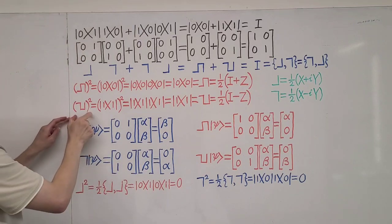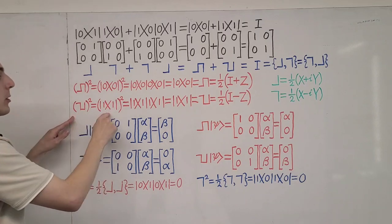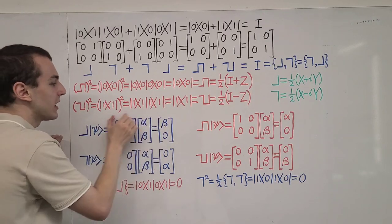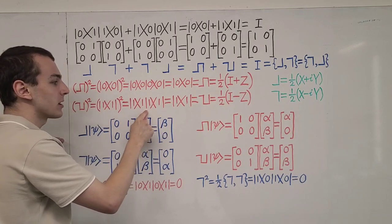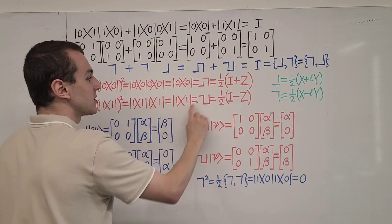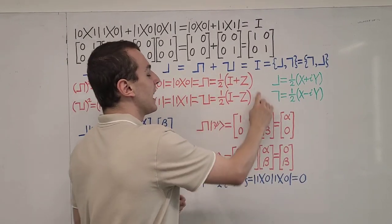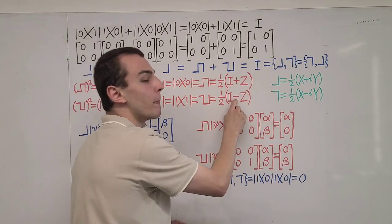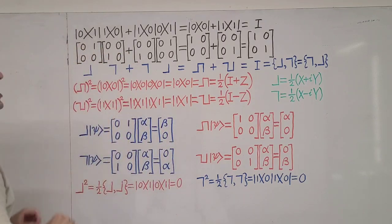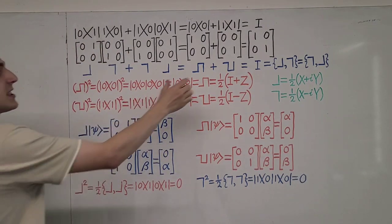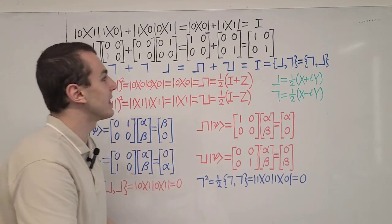Now let's have a look at this other operator over here. This is another projector, and when we square it we can use the same reasoning — write it twice, identify the inner product, evaluate that inner product as one, and get back to what we started with. This over here has a very similar form, with the only difference being a minus sign. Both of these operators are projectors. This one projects onto a subspace spanned by the ground state, and this one projects onto a subspace spanned by the excited state.